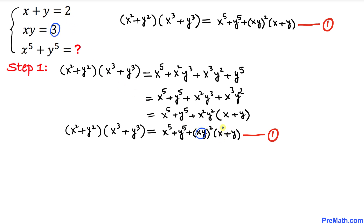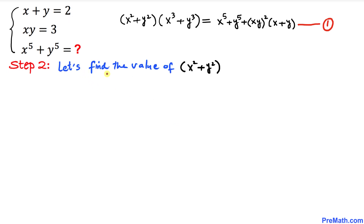In this equation, we already know x times y equals 3 and x plus y equals 2. If we can also find x square plus y square and x cube plus y cube, we can easily find the value of x power 5 plus y power 5.